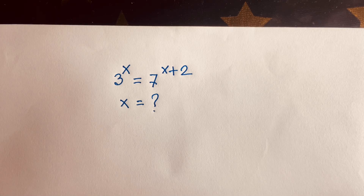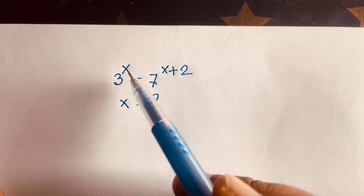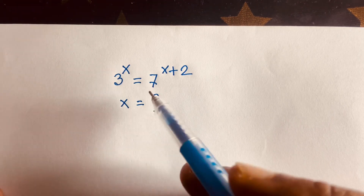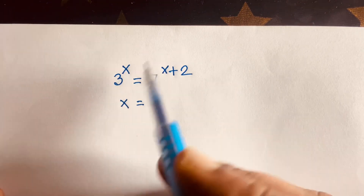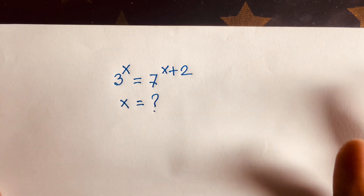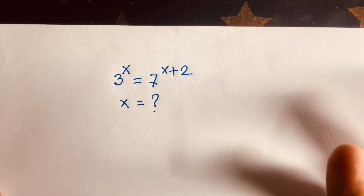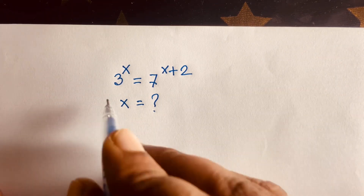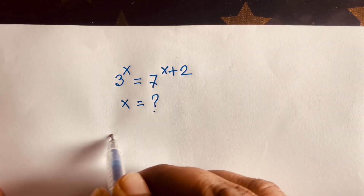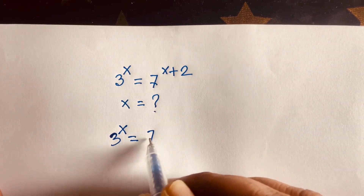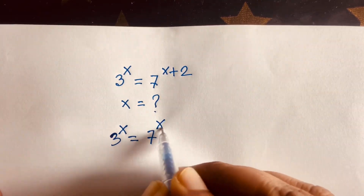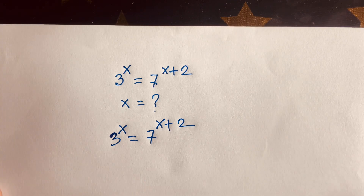Hello everyone. In this video we'll solve this interesting math question: 3 to the power x is equal to 7 to the power x plus 2, and x is equal to what? Let's start. Our question is 3 power x is equal to 7 power x plus 2.